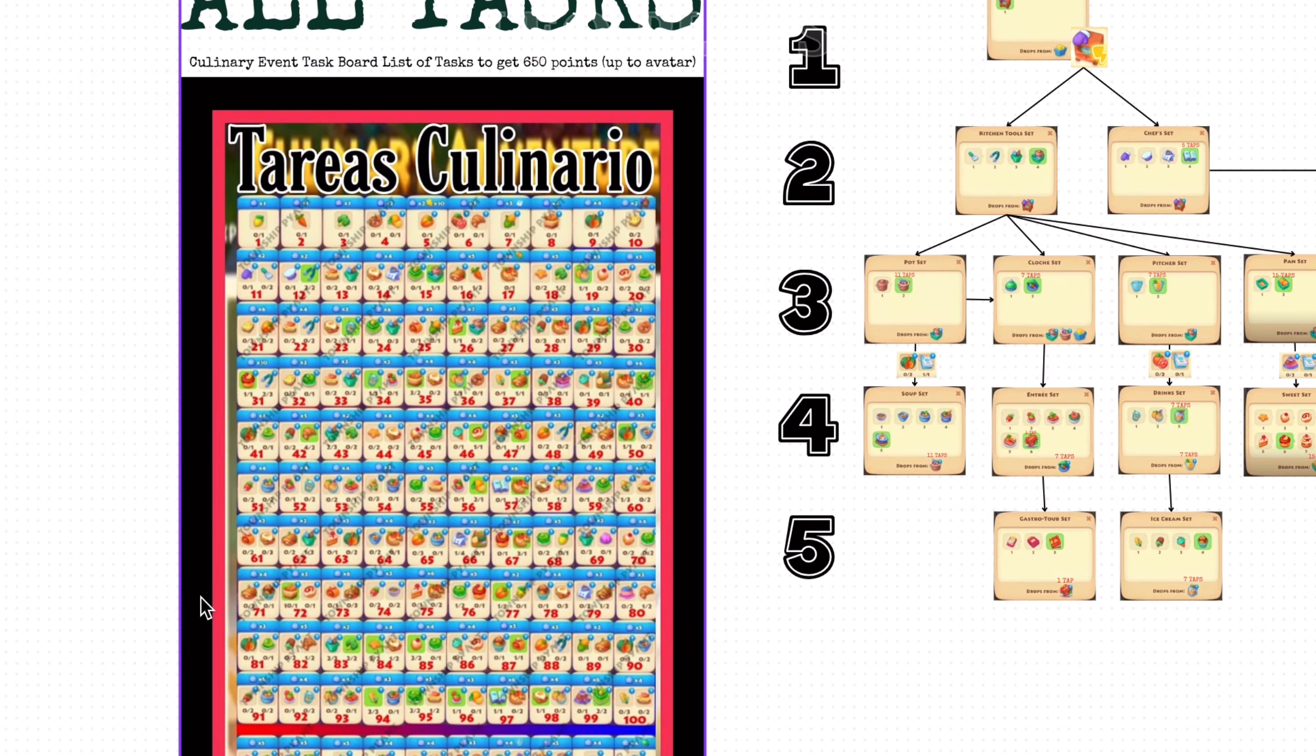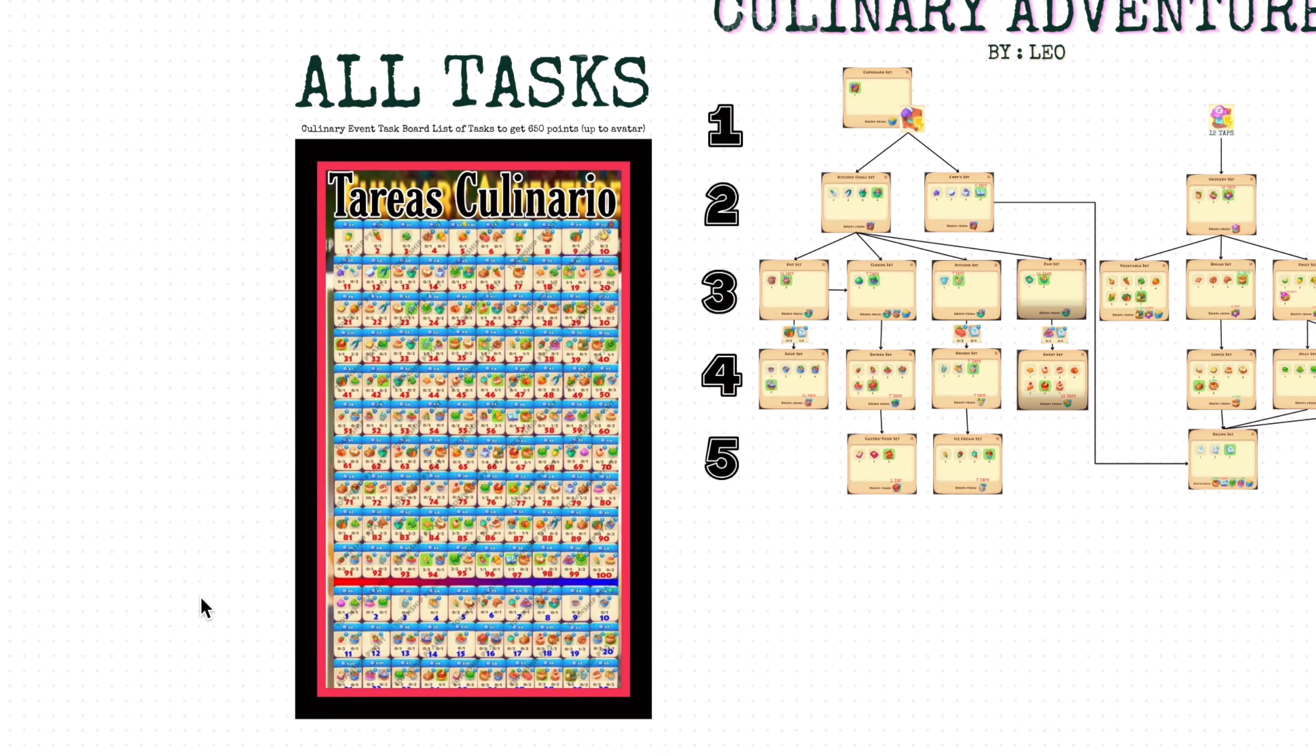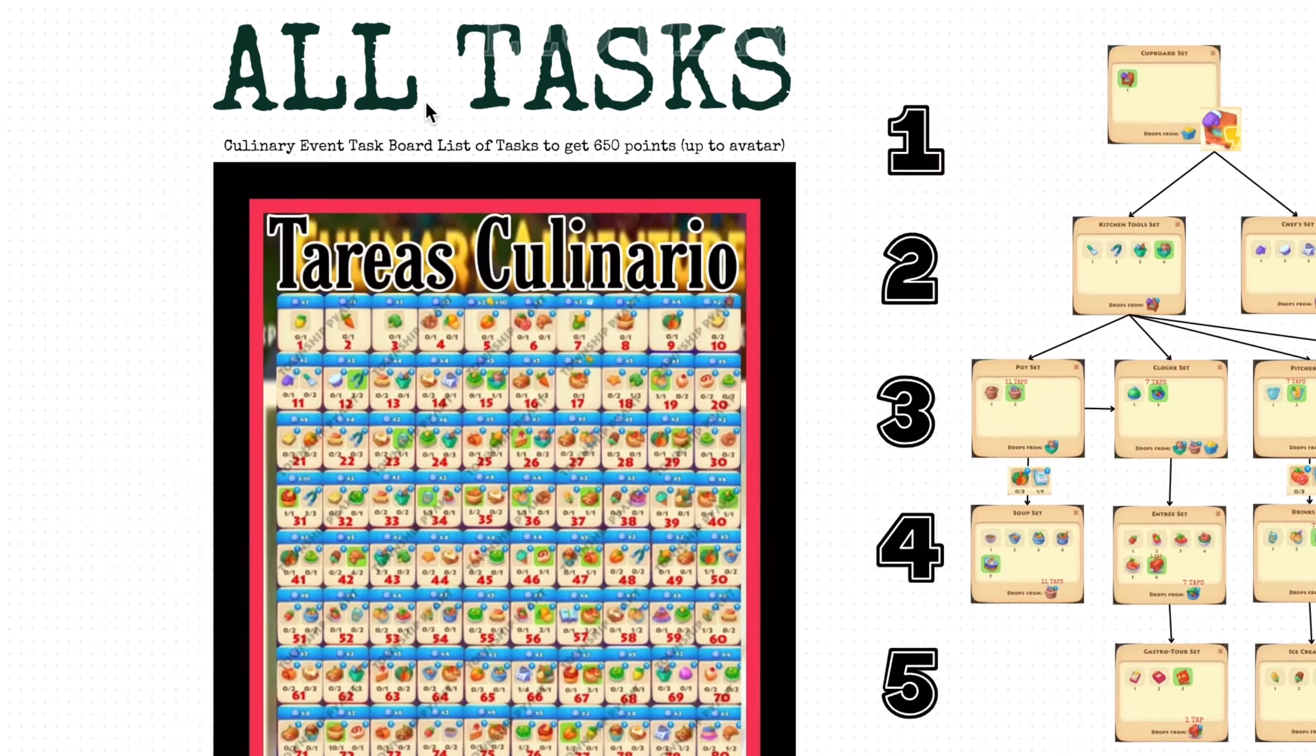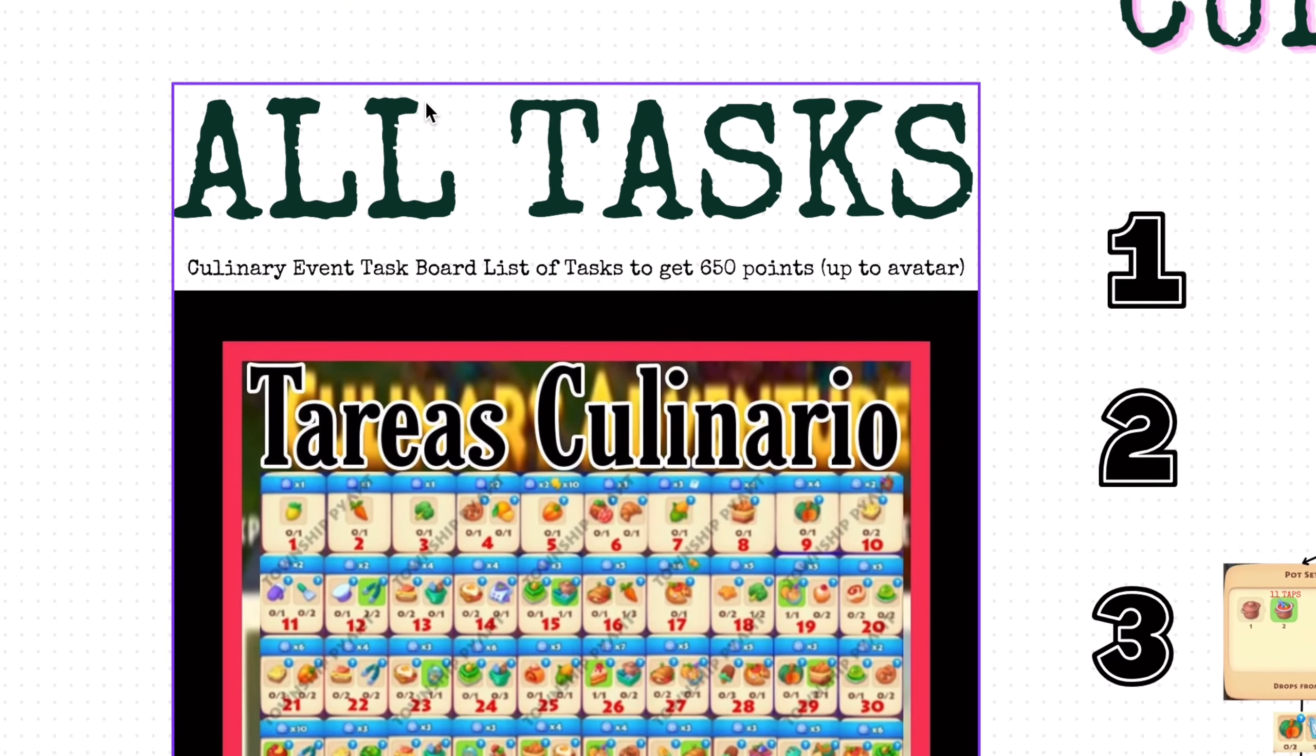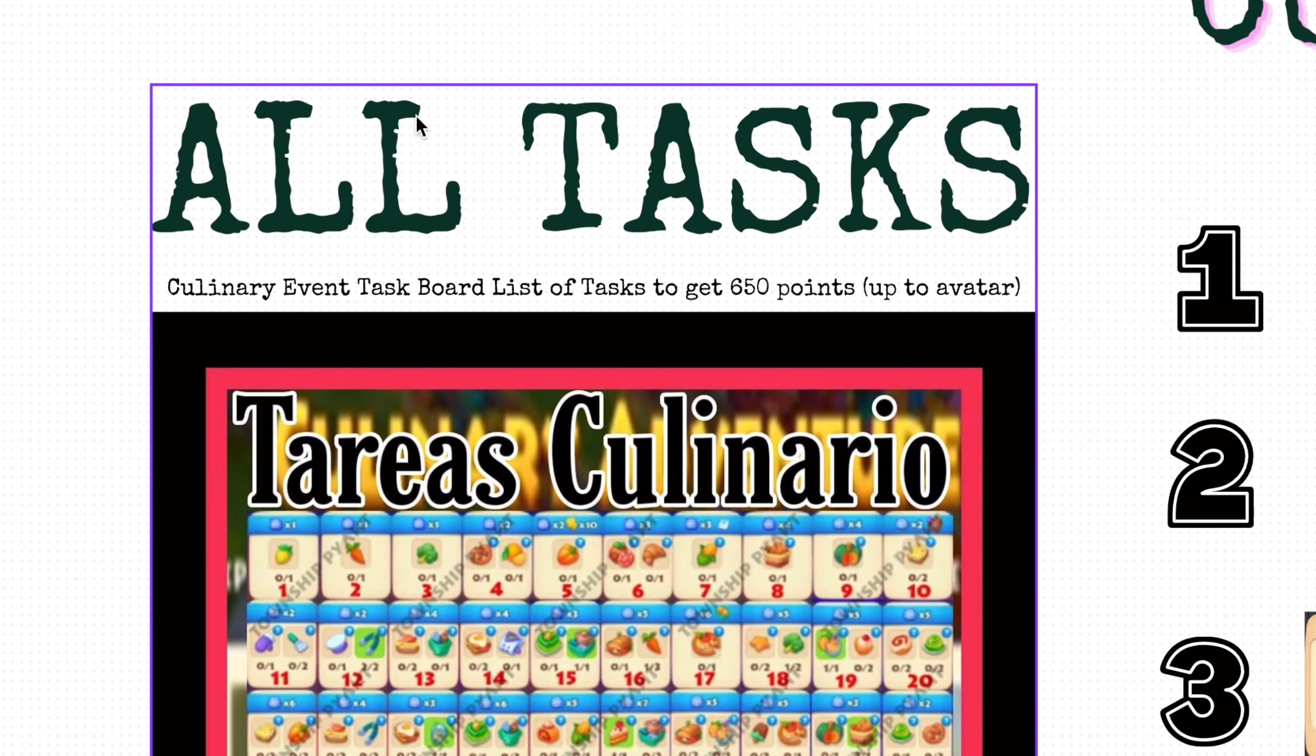Here's a bonus. This is the culinary event task. It only goes up to 650 points, which can get you the avatar picture. So keep in mind this list is not the complete or full list of tasks.